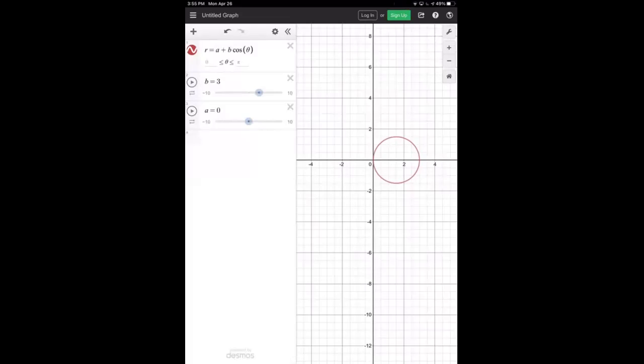Line two is a slider for B values and line three is a slider for A values. Right now B is set to be three and A is set to be zero. That means that our equation is really R equals three cosine theta. Now notice on the graph that this results in a circle.